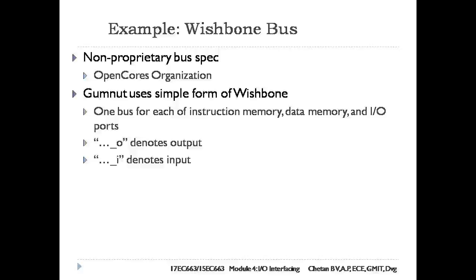The Gumnet core uses a simple form of Wishbone bus for each of the instruction, data, and IO port connections. The signals with an underscore O suffix are outputs from a component, and the signals with an underscore I suffix are inputs. When multiple underscore O signals are to be connected to an underscore I signal, a multiplexer is required.